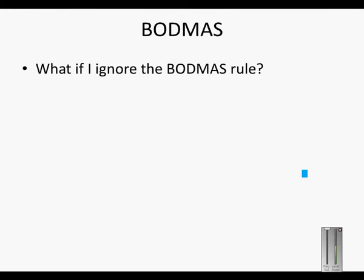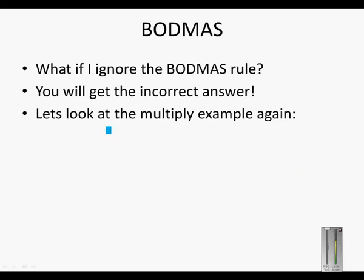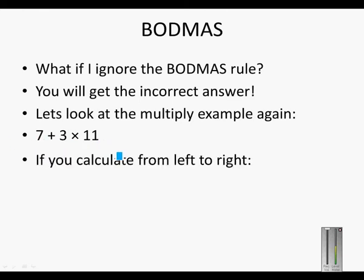But what if I ignore the BODMAS rule? Well then you will get the incorrect answer. So let's look at the multiply example again. The question was 7 + 3 × 11. If you simply calculate from left to right and ignore the BODMAS rule, this is what will happen.